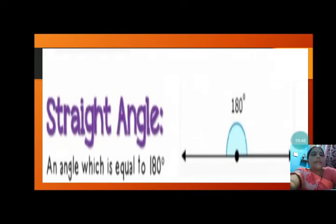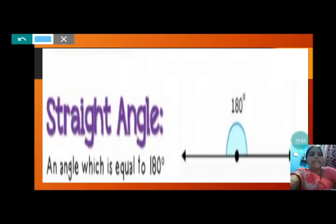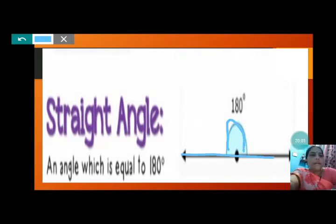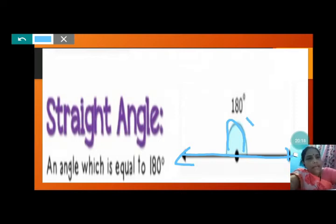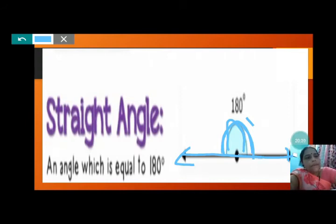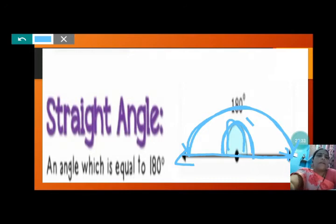An angle which is equal to 180 degrees — you can see 180 degrees here. This is a straight line making 180 degrees — that is called a straight angle. One arm started from here and ended till here. So that makes 180 degrees — it takes a turn of 180 degrees and is called a straight angle.